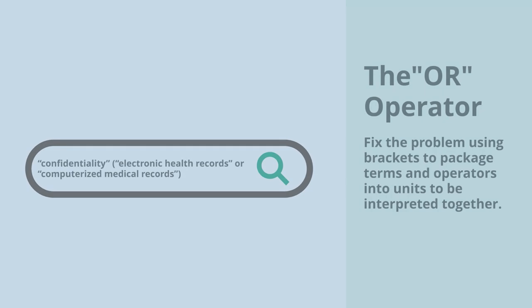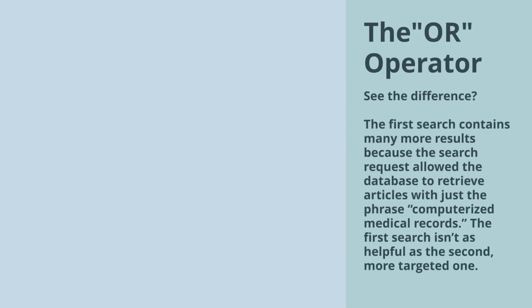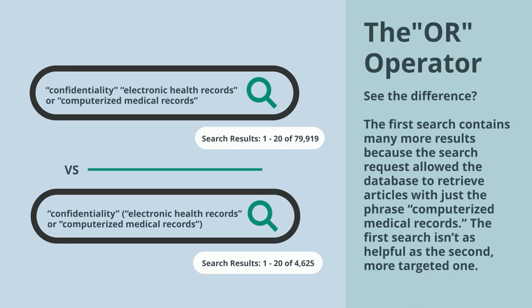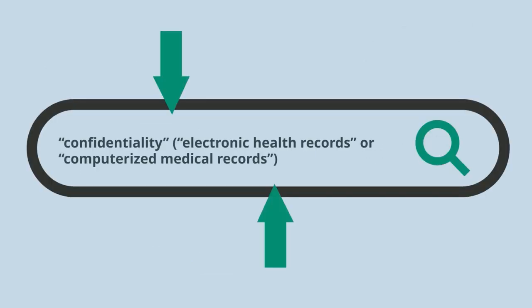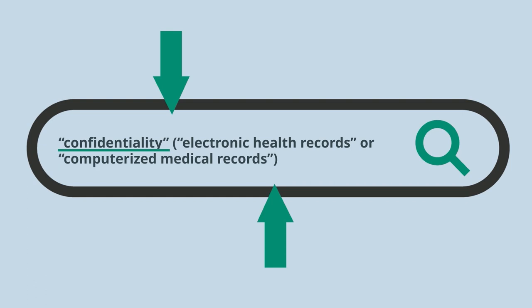Fix the problem using brackets to package terms and operators into units to be interpreted together. See the difference? The first search contains many more results because the search request allows the database to retrieve articles on just the phrase 'computerized medical records.' The first search isn't as helpful as the second, more targeted one. With the brackets placed correctly, we will retrieve articles containing confidentiality and electronic health records, or articles containing confidentiality and computerized medical records, or articles containing confidentiality and both terms.